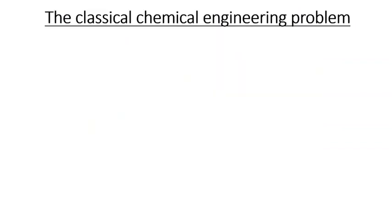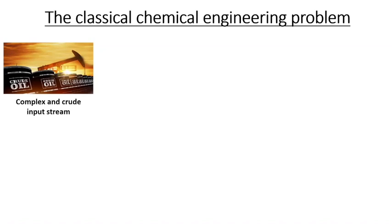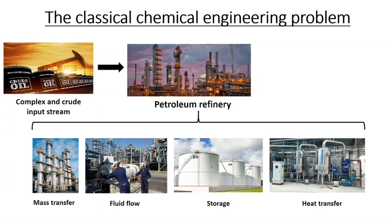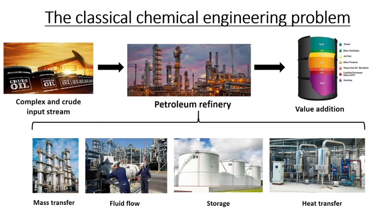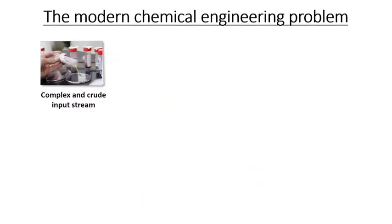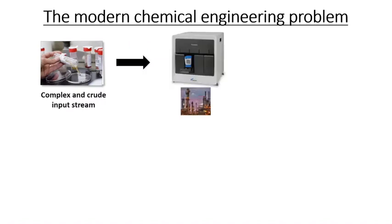Let's start by drawing a comparison between the classical chemical engineering problem and the modern one. In the classical problem, the complex and crude input stream is processed in a giant refinery with various unit operations to develop valuable products. In the modern chemical engineering problem, the complex and crude input stream, which is here the sputum sample of a TB infected patient, goes into a lab-based equipment like GeneXpert.